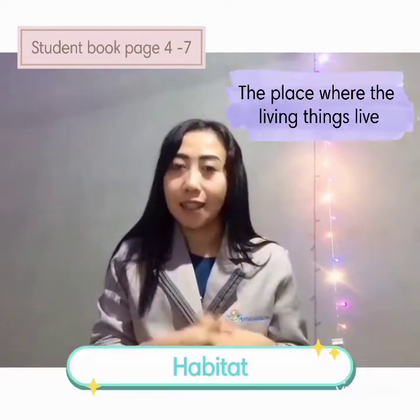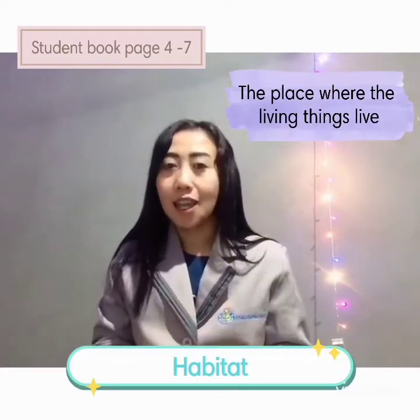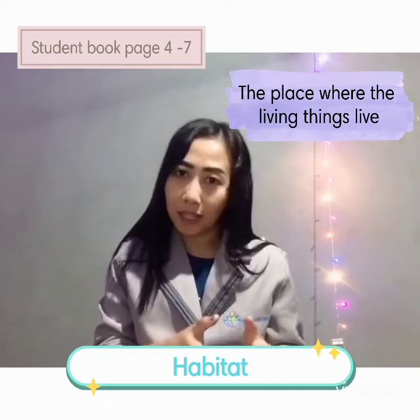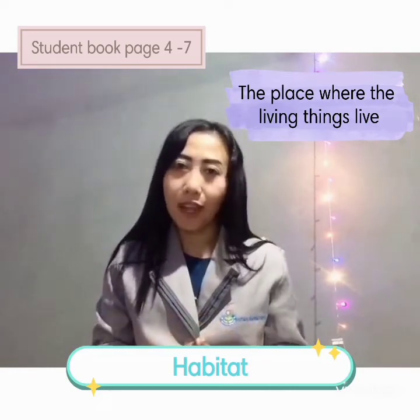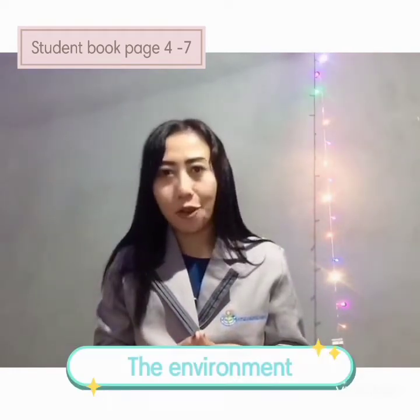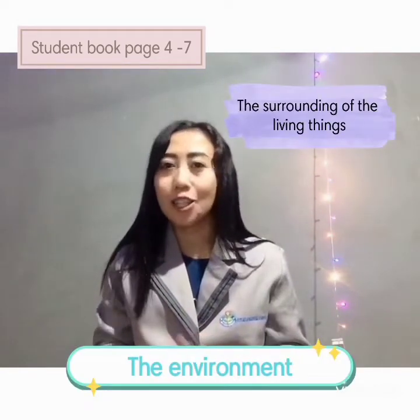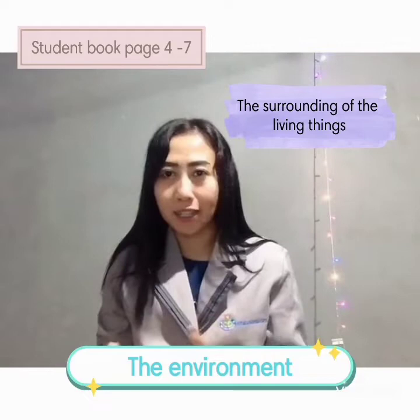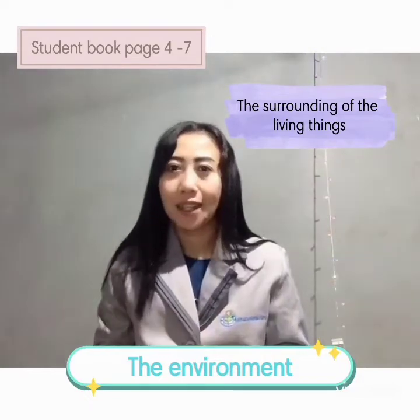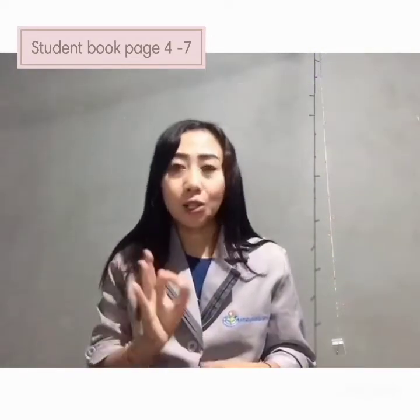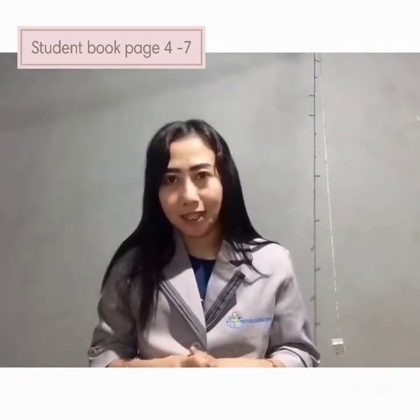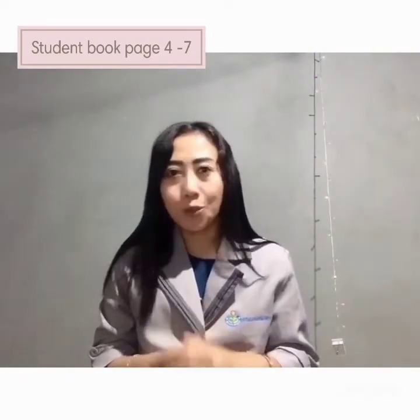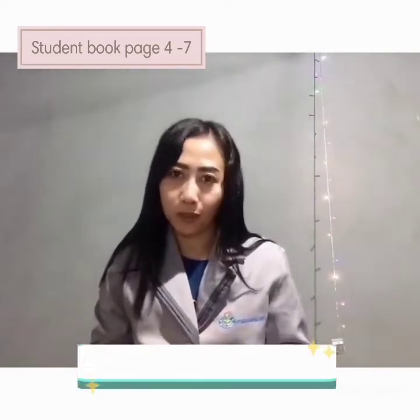Habitat is the place where the living things live, and environment is the surrounding of the living things. There are three habitats. The first one: pond.